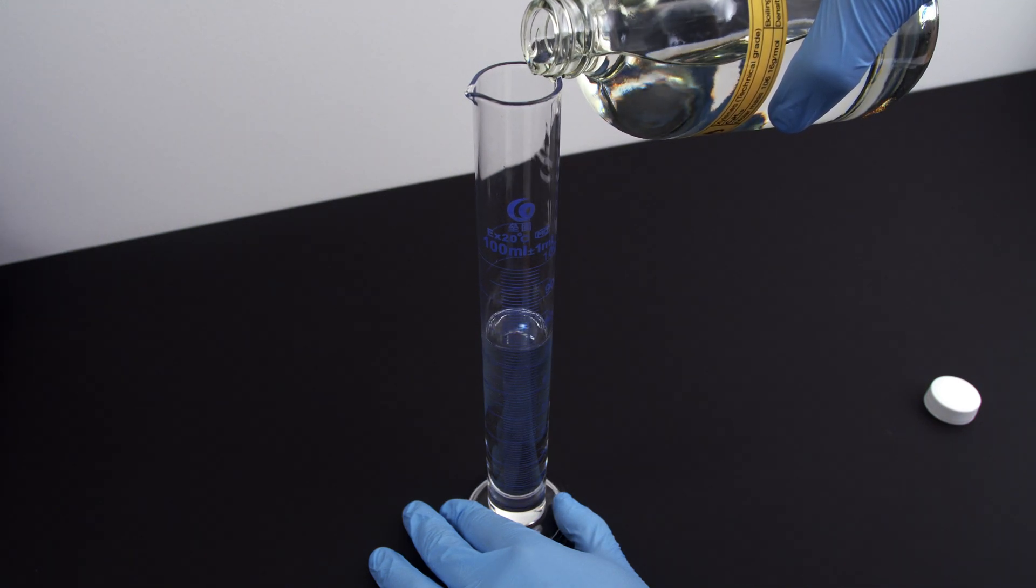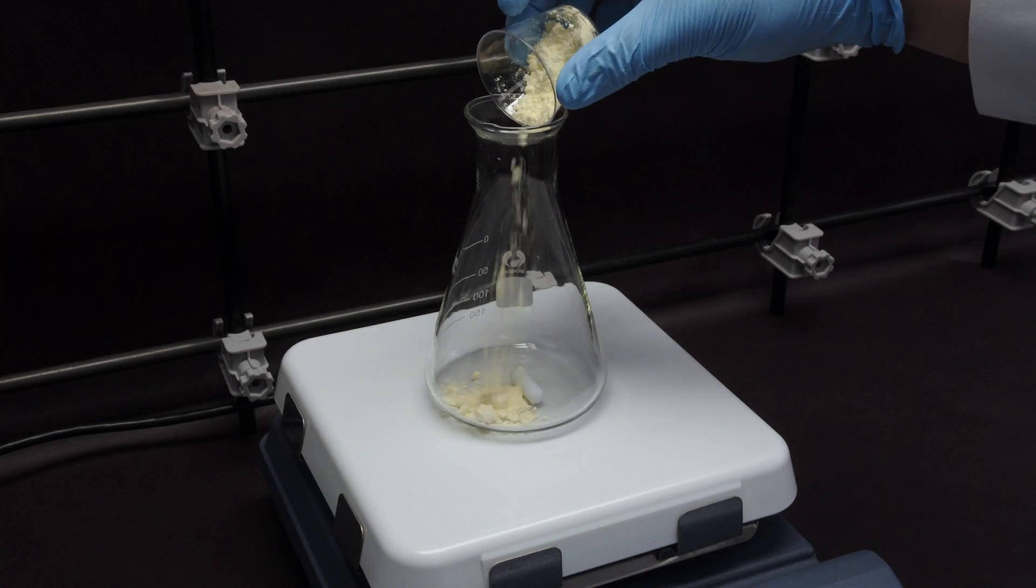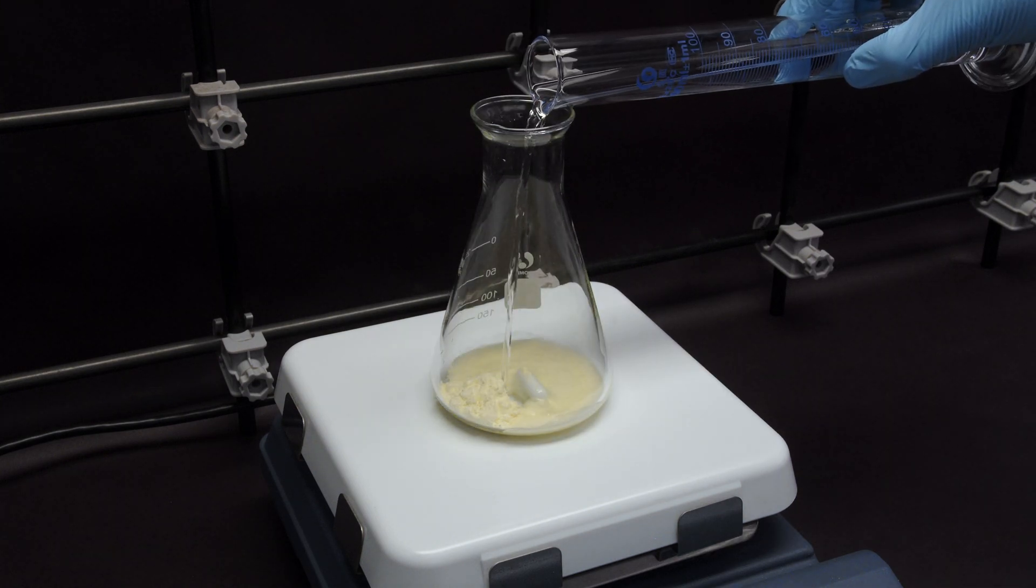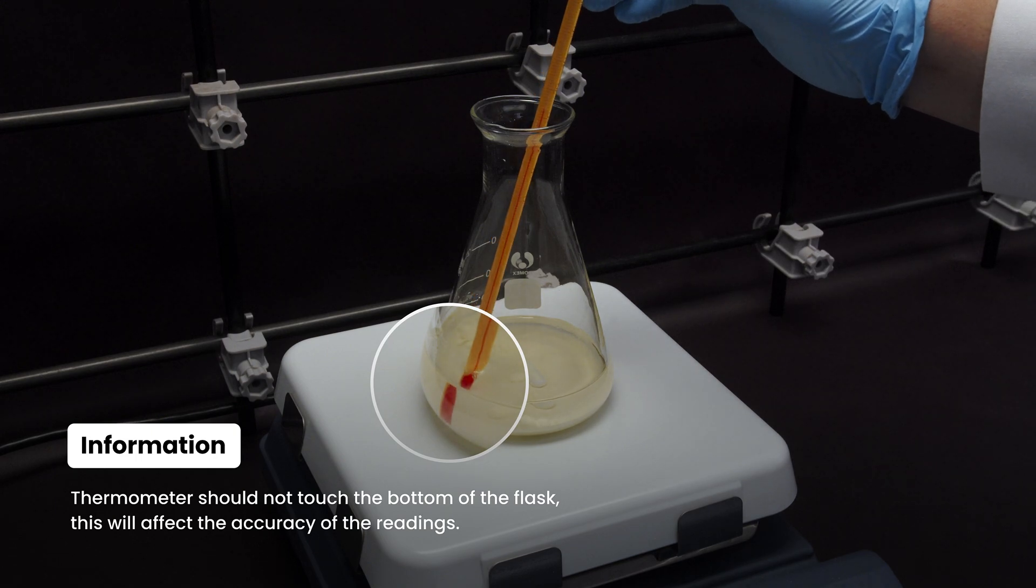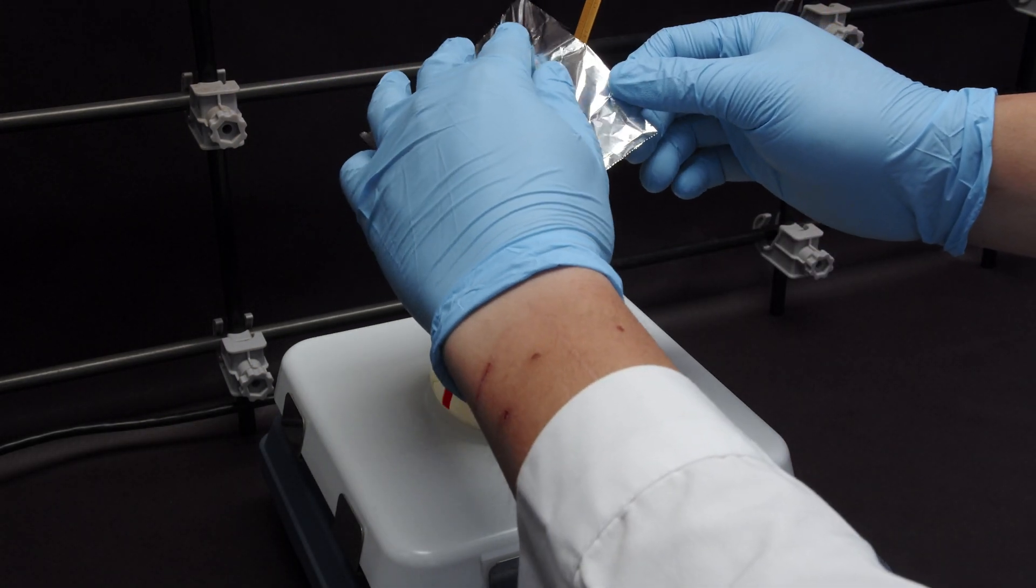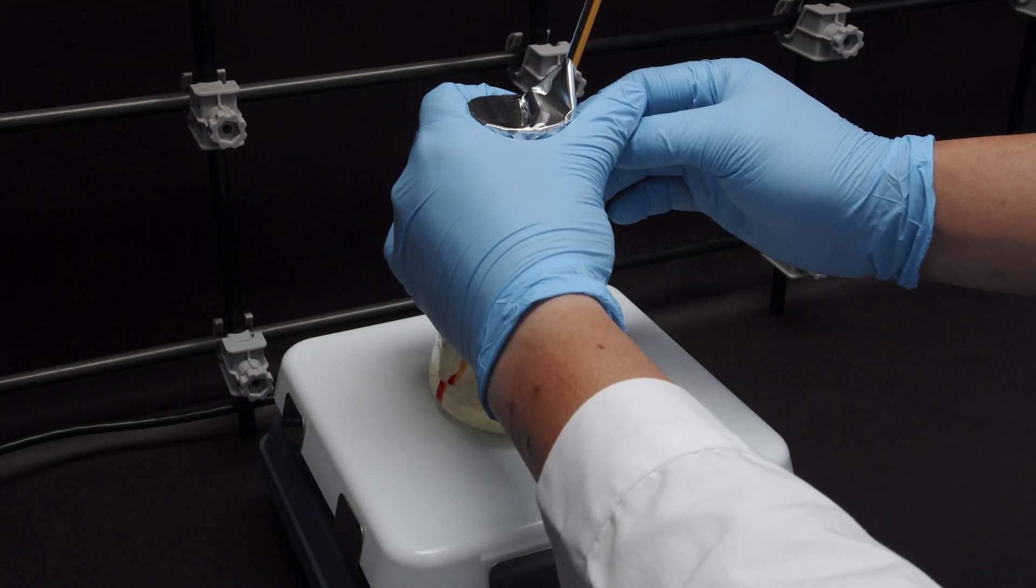Start the setup by adding a stir bar to a conical flask. Sulfur powder is then added to the conical flask, followed by xylene. Add a thermometer to monitor the temperature. Ideally, it shouldn't touch the bottom, as it will provide less accurate readings. The top is covered by aluminum foil to minimize vapor escape while maintaining an open system.